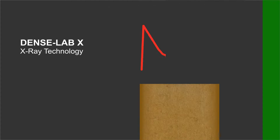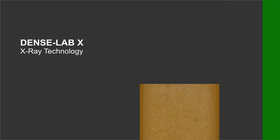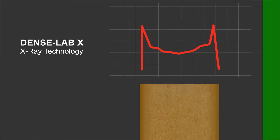The result of this profile shows that there must have been too much pressure in the first third of the press. This shows that there was too much pressure in the lower zone section of the press.